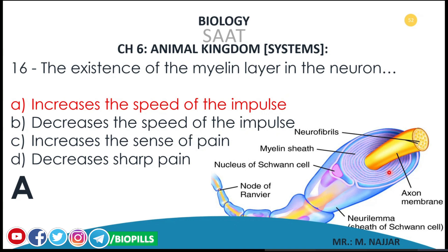In myelinated axons, the speed of nerve impulse transmission is very high in comparison with non-myelinated axons. So if there is a myelin sheath around the axon of the neuron, it will enhance and increase the speed of the transmission of the nerve impulse.